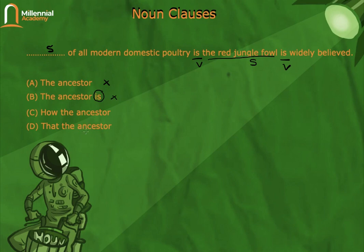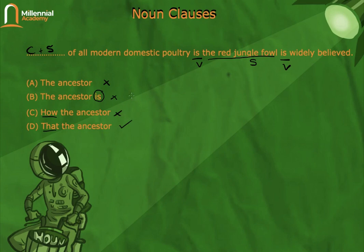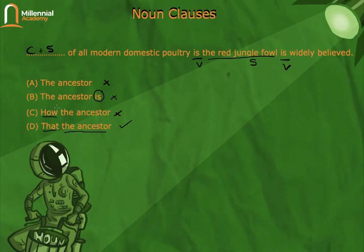So the answer is between C and D, since both have a connector — 'how' and 'that.' It comes down to meaning. Option D: 'That the ancestor of all modern domestic poultry is the red jungle fowl is widely believed' — meaning it is widely believed that the ancestor of all domestic poultry is the red jungle fowl. Option C uses 'how,' which doesn't fit in meaning. So the correct answer is D — we need a connector and the right meaning, which is 'that,' not 'how.'